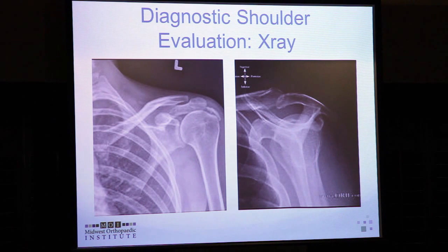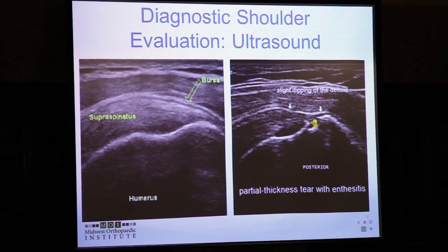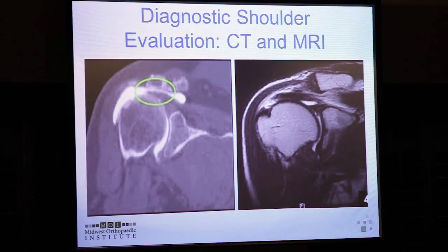Ultrasound in the office is increasingly common — we have three units and use them frequently. A normal tendon appears uniformly echogenic; a hypoechoic area in the supraspinatus indicates a partial tear. CT arthrogram uses an iodine-type injection; if the iodine leaks out of the joint, it confirms a rotator cuff tear. However, MRI is my preferred advanced imaging because it gives much more soft tissue information without requiring injection techniques.